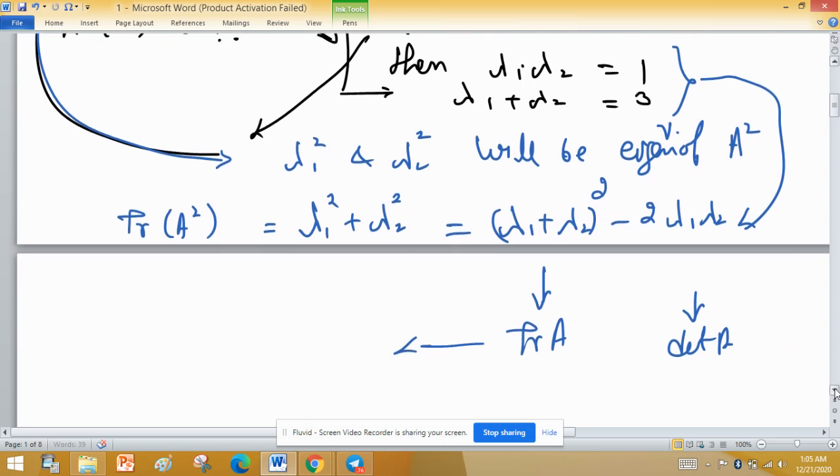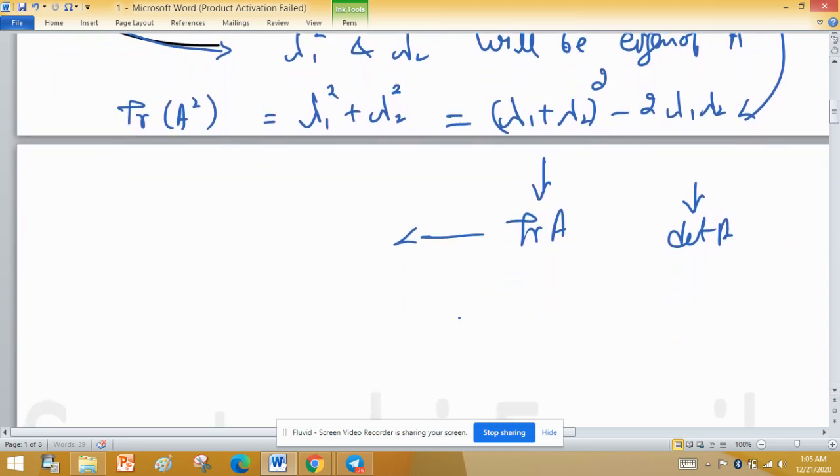Now put the value of the given terms. Lambda 1 plus lambda 2, that is trace of A which is equal to 3, squared minus 2 times the product, the determinant of A which is 1. 3 squared is 9 minus 2 which equals 7. That is, trace of A squared is 7.